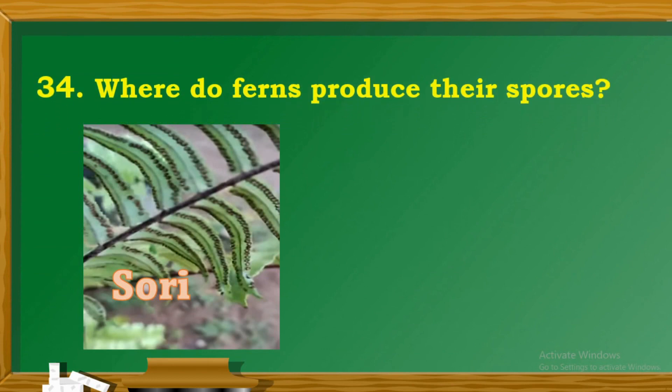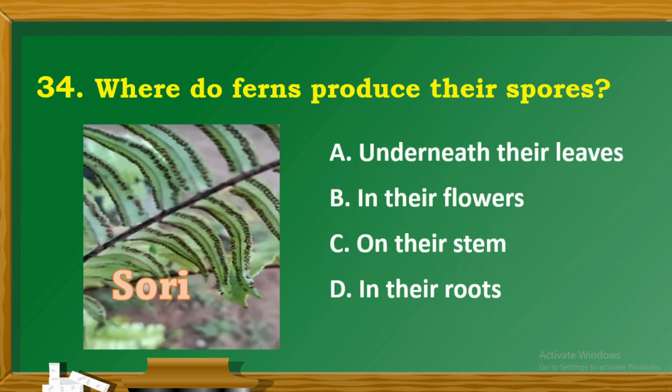Question 34: Where do ferns produce their spores? A. Underneath their leaves. B. In their flowers. C. On their stem. D. In their roots.